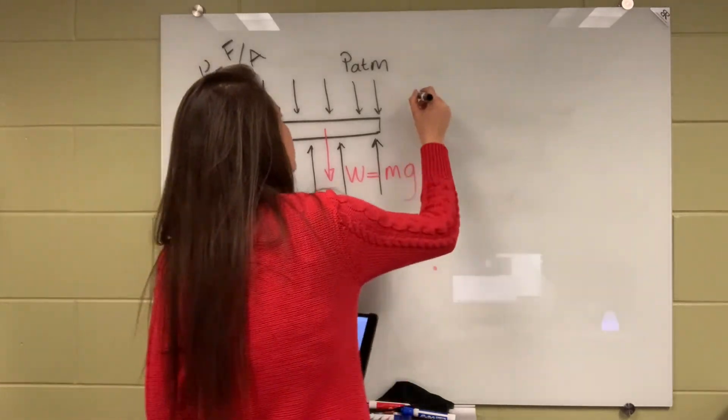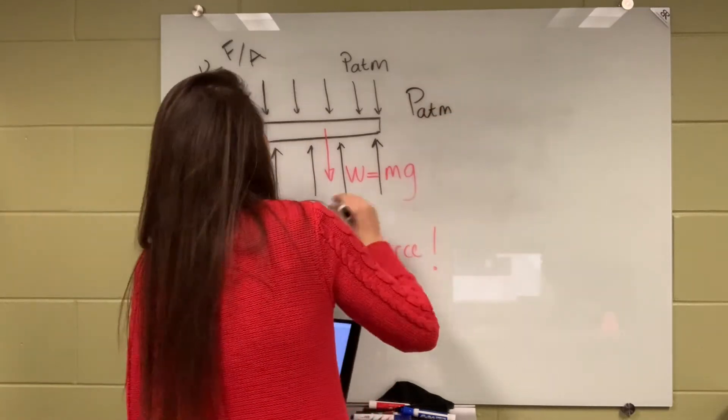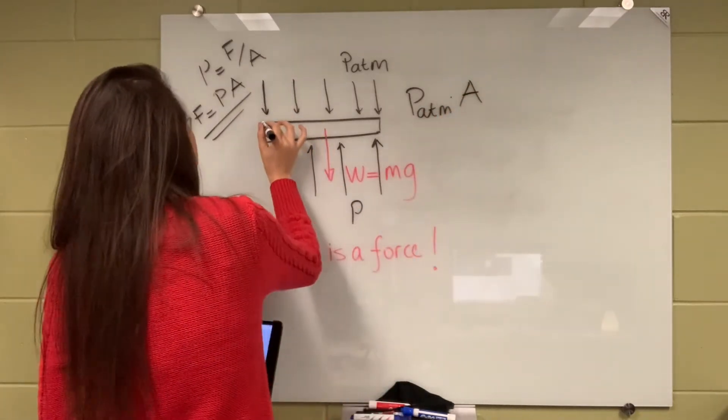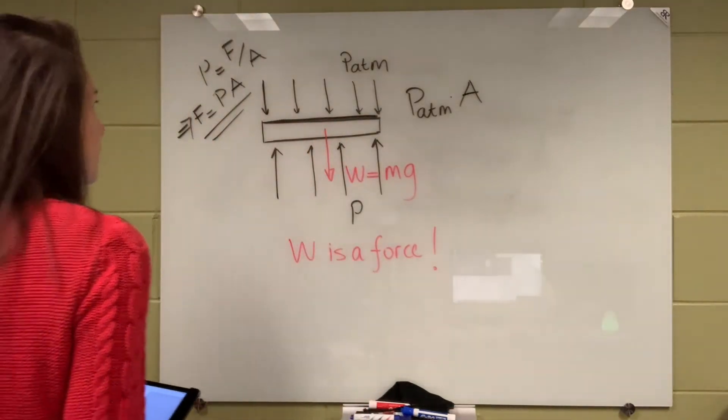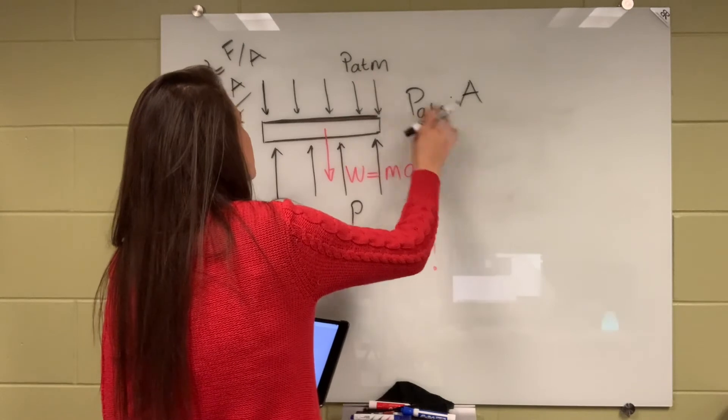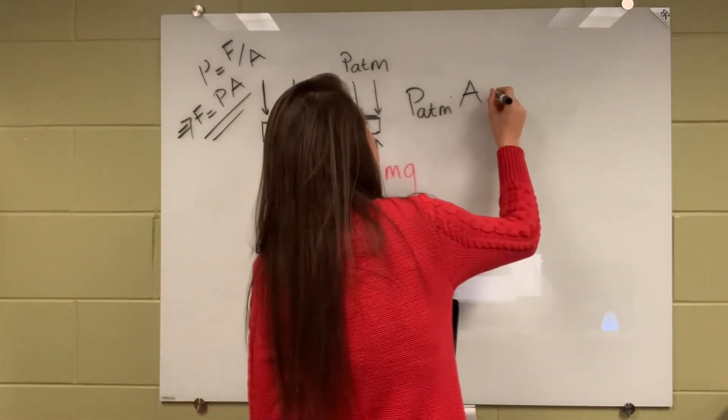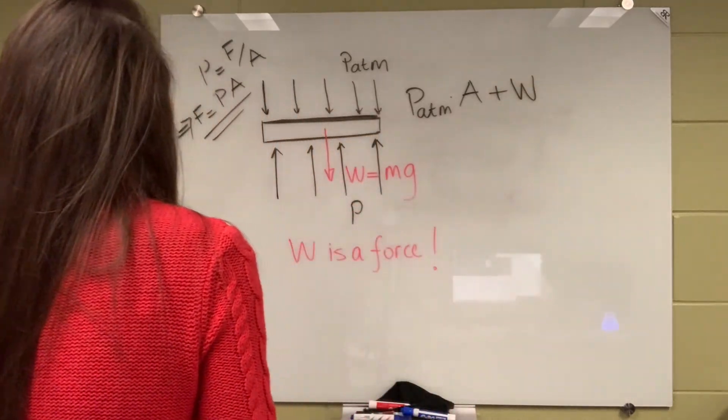So atmospheric pressure times area of the piston. The pressure is acting on this cross-sectional area of the piston, and this is plus the weight. Weight is a force by itself, so we're just keeping it as weight in the equation.